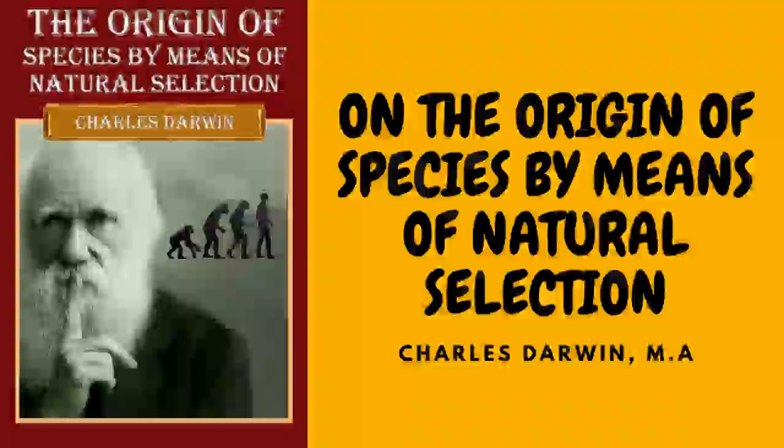I should think from facts communicated to me by Mr. Blyth on the habits, voice, and constitution of the humped Indian cattle, that these had descended from a different aboriginal stock from our European cattle; and several competent judges believe that these latter have had more than one wild parent. With respect to horses, I am doubtfully inclined to believe, in opposition to several authors, that all the races have descended from one wild stock. Mr. Blyth thinks that all the breeds of poultry have proceeded from the common wild Indian fowl, Gallus bankiva. In regard to ducks and rabbits, I do not doubt that they all have descended from the common wild duck and rabbit.